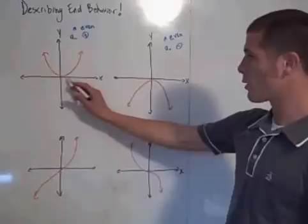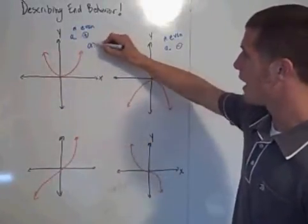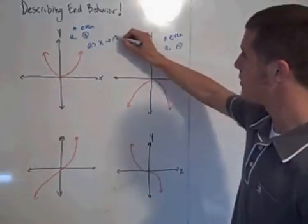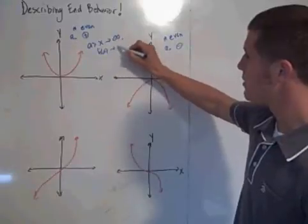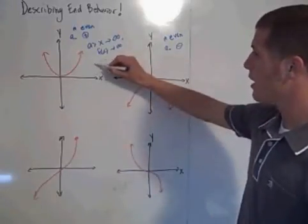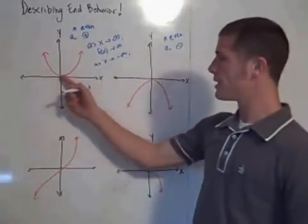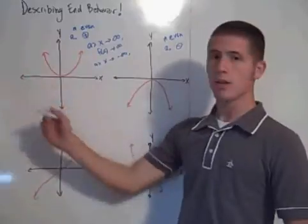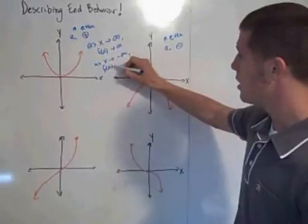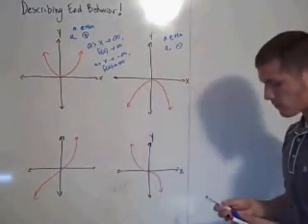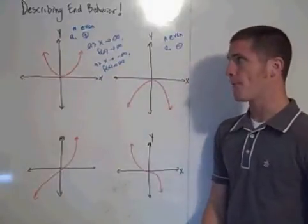So what's happening here? As x grows bigger and bigger, y is growing bigger and bigger. So as x approaches infinity, f of x approaches infinity. And as x approaches negative infinity, as x gets smaller and smaller, f of x is getting bigger and bigger, so f of x approaches infinity. That's when your degree is even and your leading coefficient is positive.